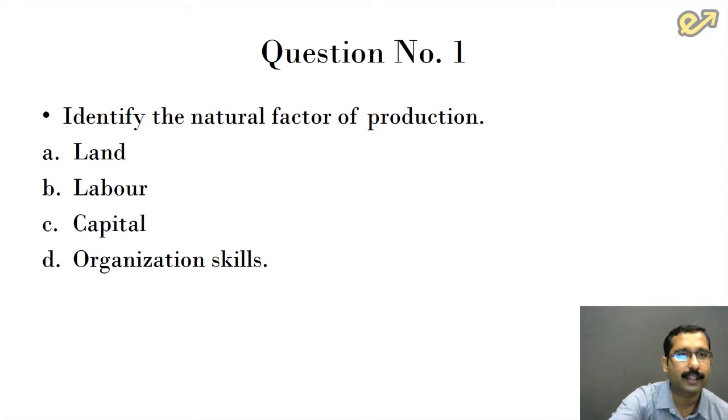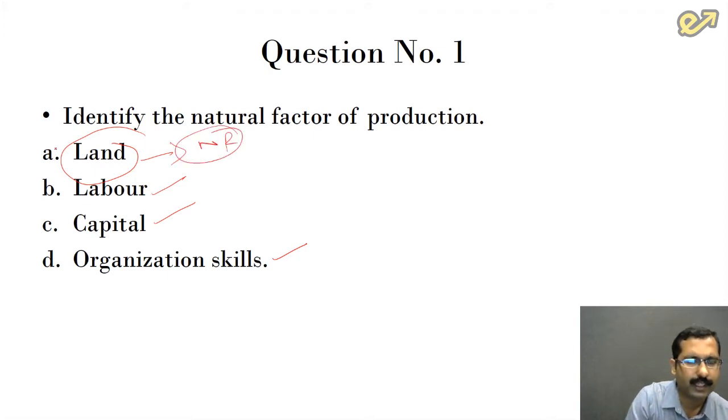The first question is: identify the natural factor of production. What we understand by natural factors is something which comes from nature with no human involvement. When it comes to labor, capital, or organization skills, there is human involvement. But when it comes to land, there is no human involvement because land is a natural resource. So the answer is option A.